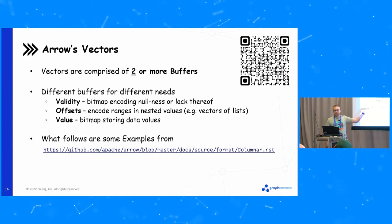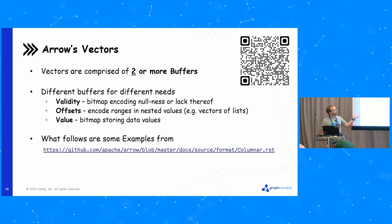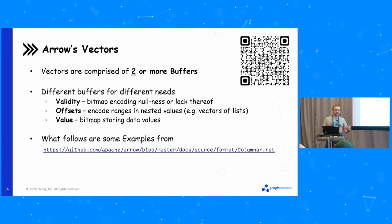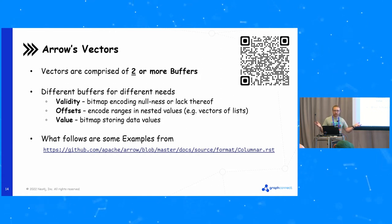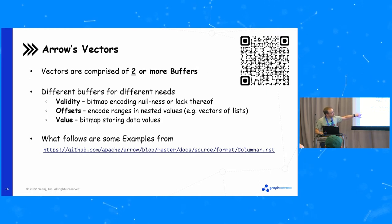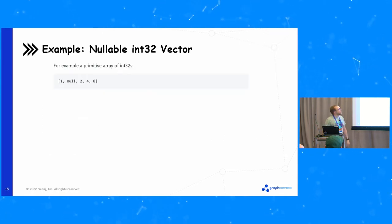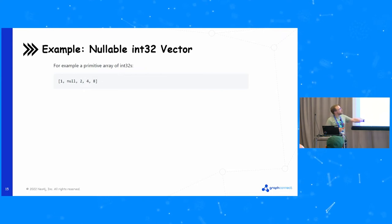Each vector is really comprised of multiple buffers. If you're not going to hack on the Arrow code base, you probably don't care about this. But it's more than just a single chunk of data — it's actually multiple chunks. You have potentially a buffer representing a bitmap of the nulls in the data, so you could have a sparse data set without just moving a bunch of bytes as placeholders for nulls. Then offsets into complex objects like lists and arrays, and then the actual values themselves packed efficiently.